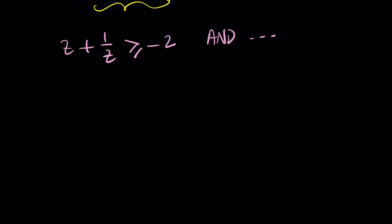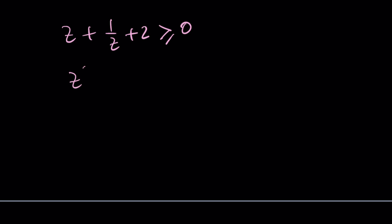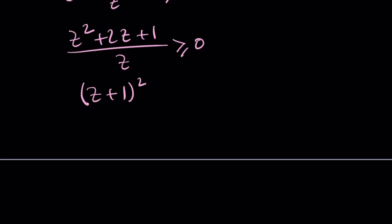Now you don't want to multiply both sides by z because that would make an assumption about z being positive. Instead, let's put everything on the same side. Add 2 to both sides, we got 0 on one side. And then you can make a common denominator. That would be z squared plus 2z plus 1 divided by z greater or equal to 0. Notice that the top, the numerator, is a perfect square. Now we're going to make a quick table.